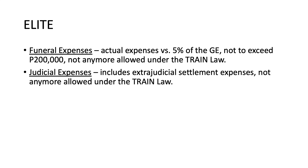The second expense is judicial expenses in the settlement of the estate of the decedent. This includes expenses for extrajudicial settlement, so both judicial and extrajudicial settlement expenses could be deducted from the gross estate. However, under the TRAIN law, this has already been disallowed.